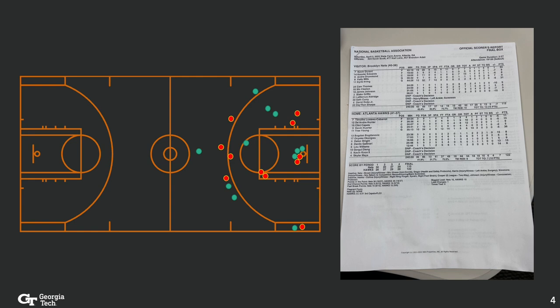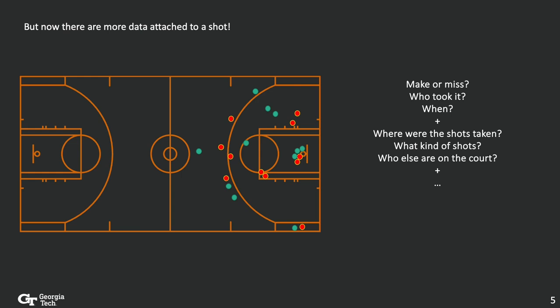For a long time, professional teams and sports media analyzed the game by tracking the results of these shots. The most important metrics are how many shots they took, how many shots they made, and the ratio of the two, which is called field goal percentage. But now there are more data attached to these shots: timestamps, the location on the court, shot types, which players are on the court, and many more.